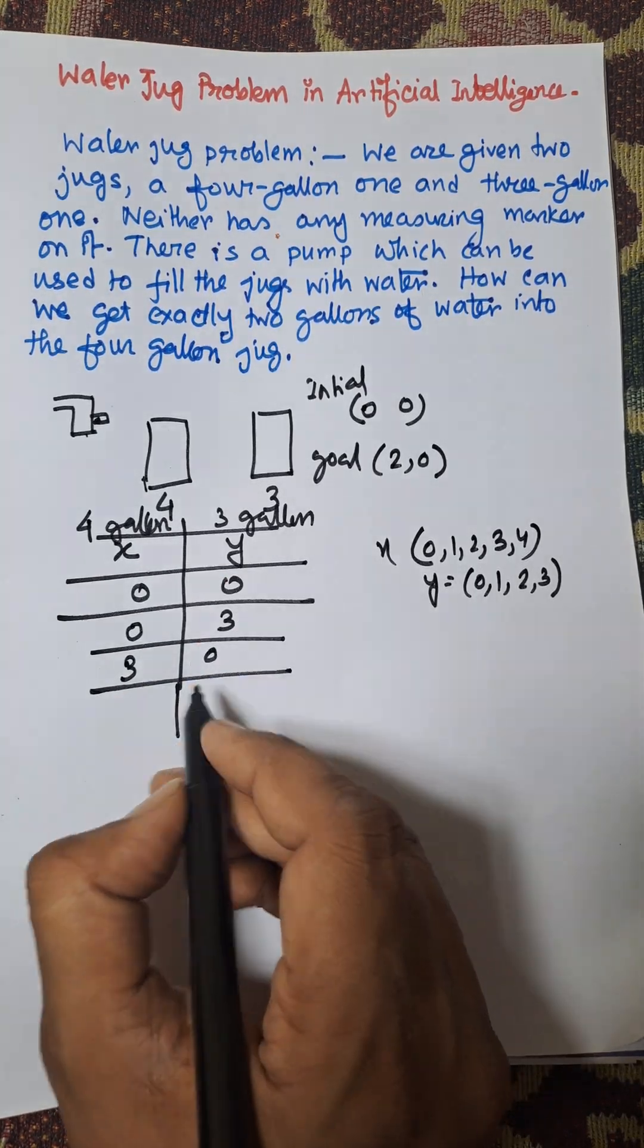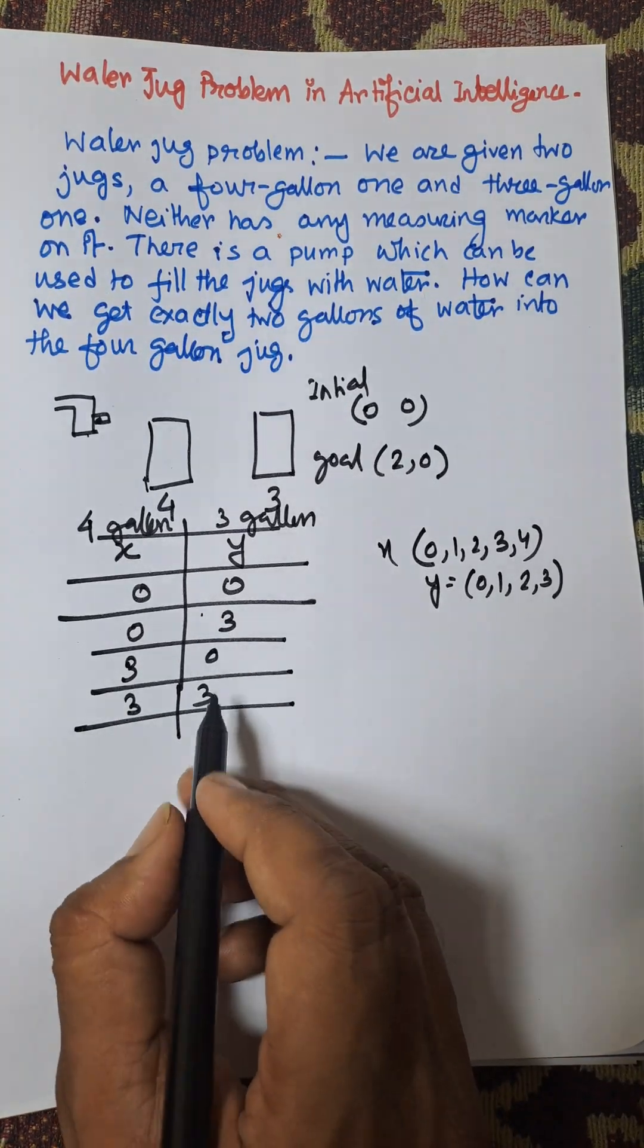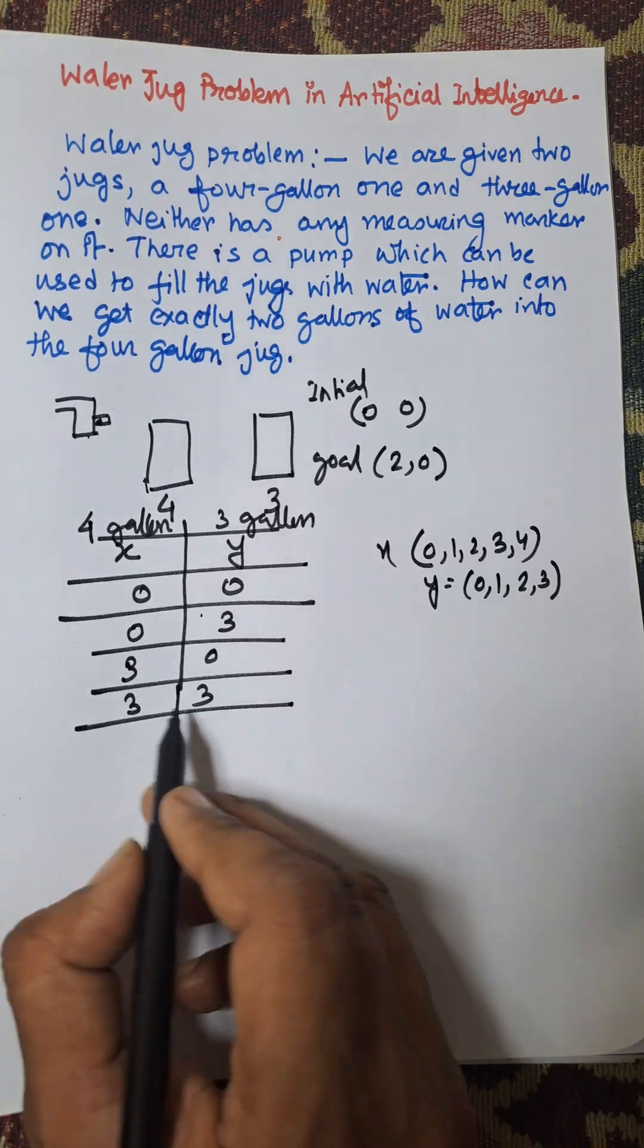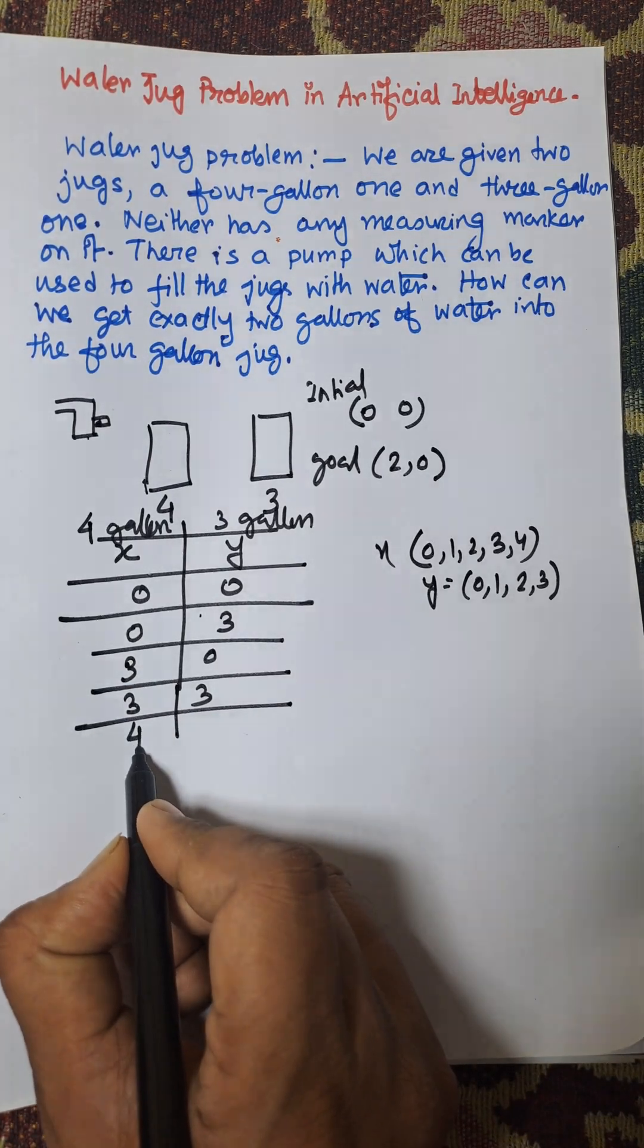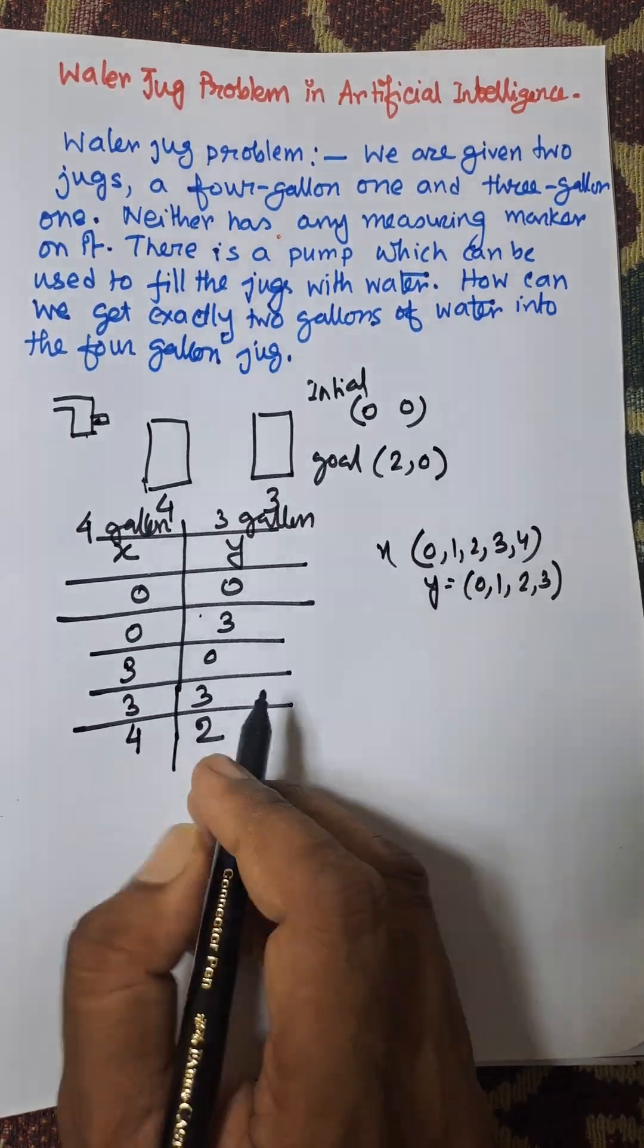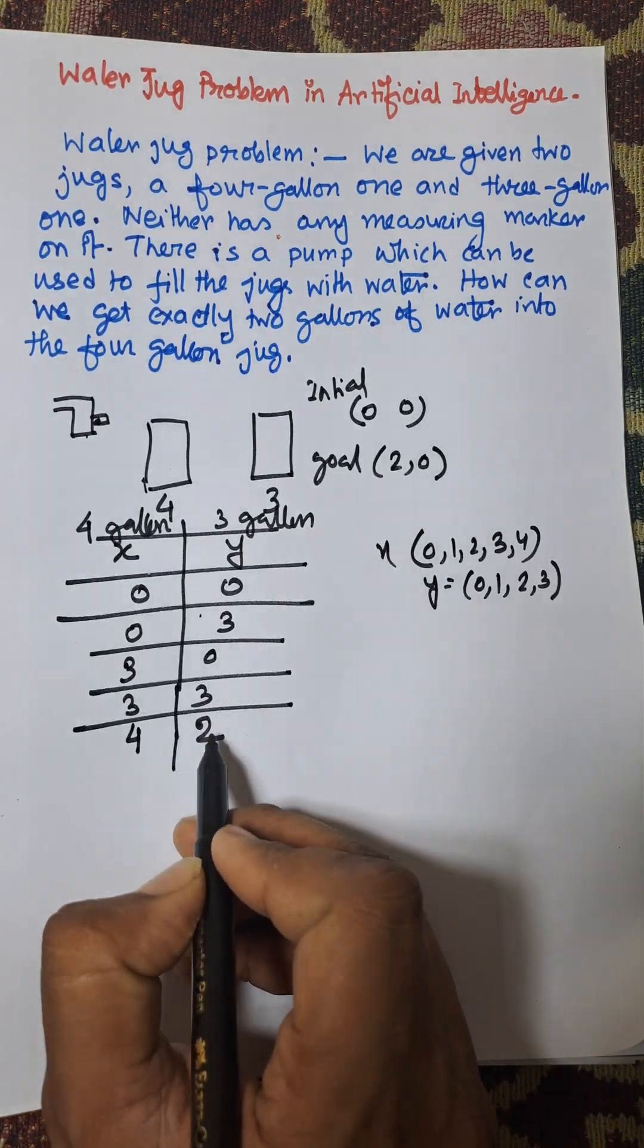Now fill the 3-gallon jug again. Fill the water from the 3-gallon jug to the 4-gallon jug until the 4-gallon jug is full. The 4-gallon jug is full and the remaining water in the 3-gallon jug is 2, as we transferred 1 gallon - giving us 4,2.